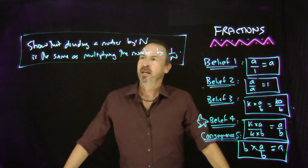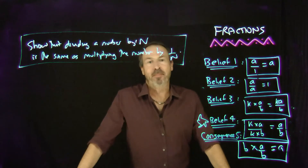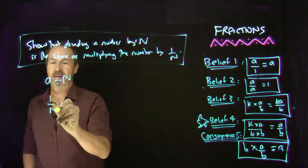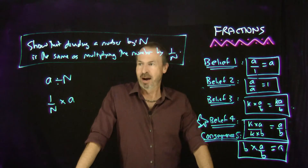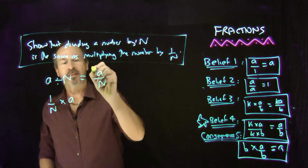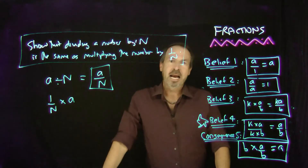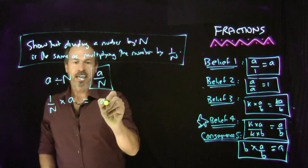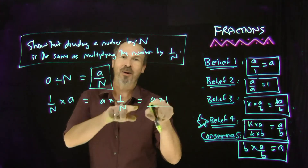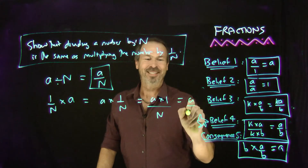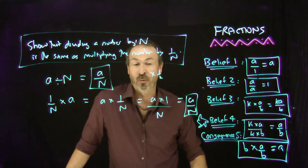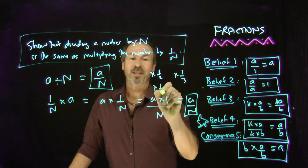Let me end this video with one final tidbit: show that dividing a number by n is the same as multiplying the number by one-nth. Take a number a divided by n — please show it's the same as one-nth times a. Well, fractions are answers to division problems, so a divided by n is just a over n. What's one-nth times a? By commutativity, that's a times one-nth. By belief number three, that's a times one all over n — which is a over n. They are the same thing. So if you want to divide a quantity by two, just multiply by a half; divide by three, multiply by a third; divide by seven, multiply by one-seventh. Fabulous.